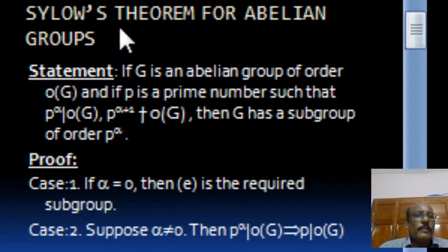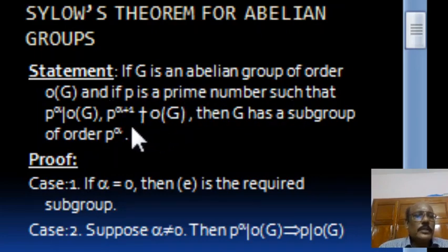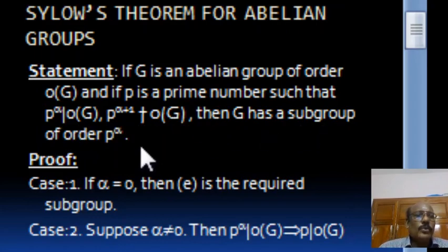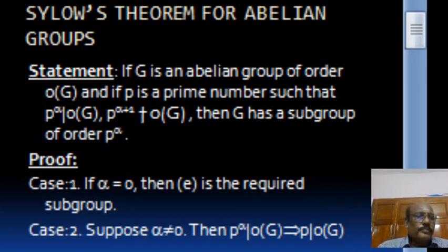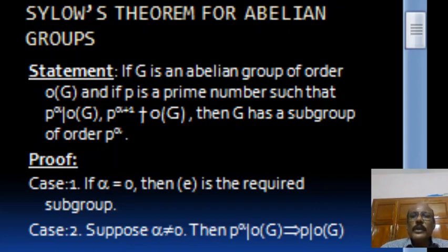Next let us prove Sylow's theorem for abelian groups. The statement is: if G is an abelian group and P is a prime number such that P power alpha divides order of G and P power alpha plus 1 does not divide order of G, then G has a subgroup of order P power alpha. That means if alpha is the highest power of P dividing order of G, then G has a subgroup of order P power alpha. If alpha equals 0, we need a subgroup of order 1; trivially singleton {E} is such a subgroup. So assume alpha is not equal to 0.